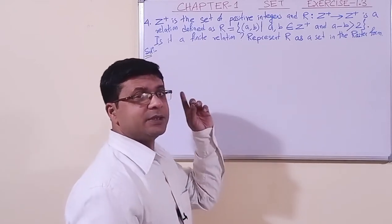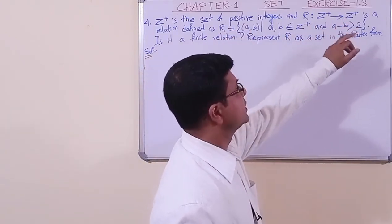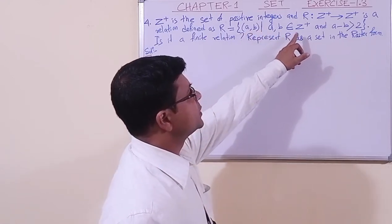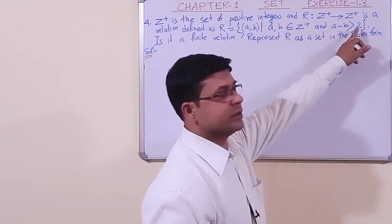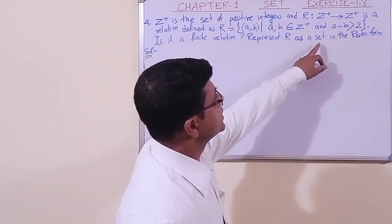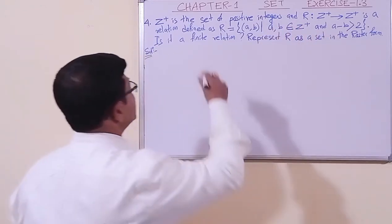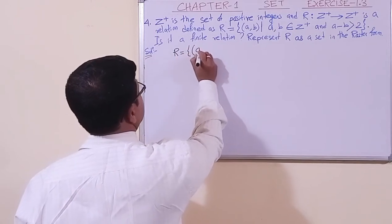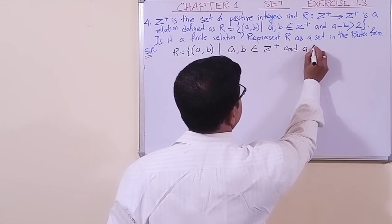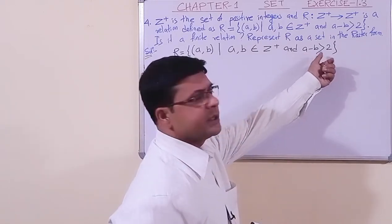Now we have taken question number 4. Z is used to indicate the set of integers, and Z+ is the set of positive integers. A relation R from Z+ to Z+ is defined as: R = {(a, b) such that a and b belong to Z+ and a minus b is greater than 2}. That is, the difference of the two components is greater than 2. Is it a finite relation? Represent R as a set in roster form.